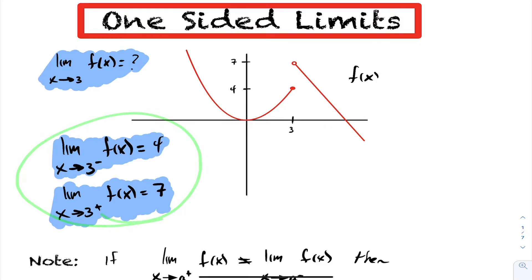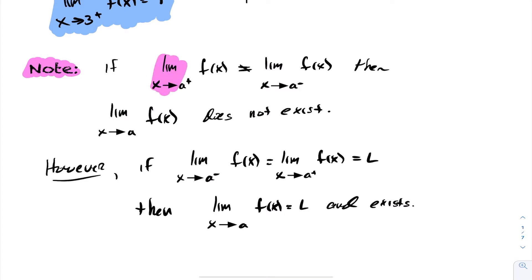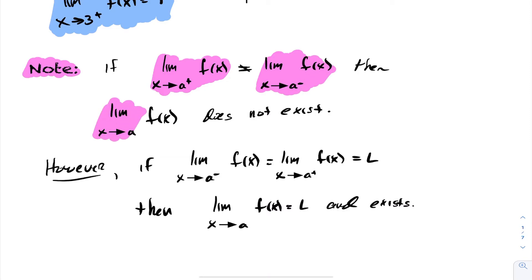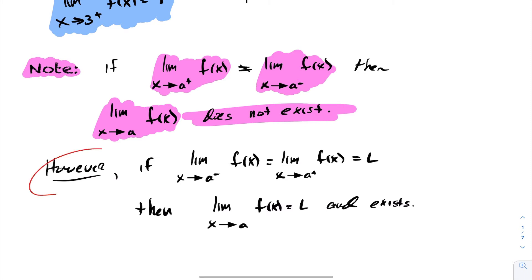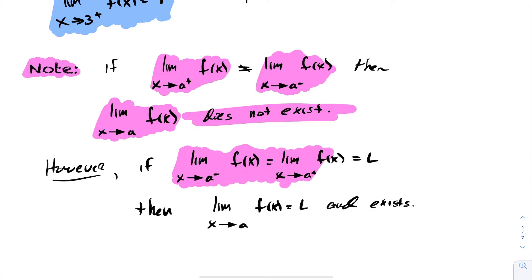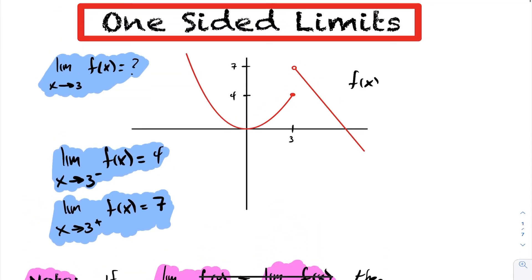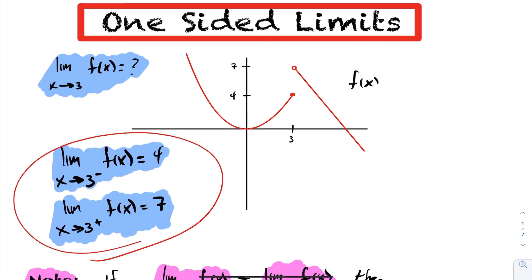So what does this mean when the limit from the left and right do not equal? If the limit from the right-hand side is not equal to the limit from the left-hand side, then at that value a, that limit does not exist. However, if the limit from the left and right both equal some value L, then the limit exists and is equal to L. Going back to the previous example, the limit from the left and right were not equal, so this limit does not exist.